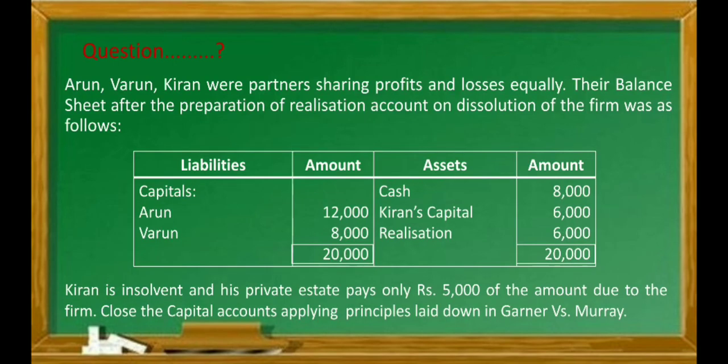The first question is: Arun, Varun, and Kiran are partners sharing profits and losses equally. Their balance sheet after the preparation of the realization account on dissolution of the firm is given, along with the necessary adjustments. Kiran is insolvent and his private estate pays only Rs. 5,000 of the amount due to the firm. Close the capital accounts and apply the principles laid down in Garner vs. Murray. This question is very simple.